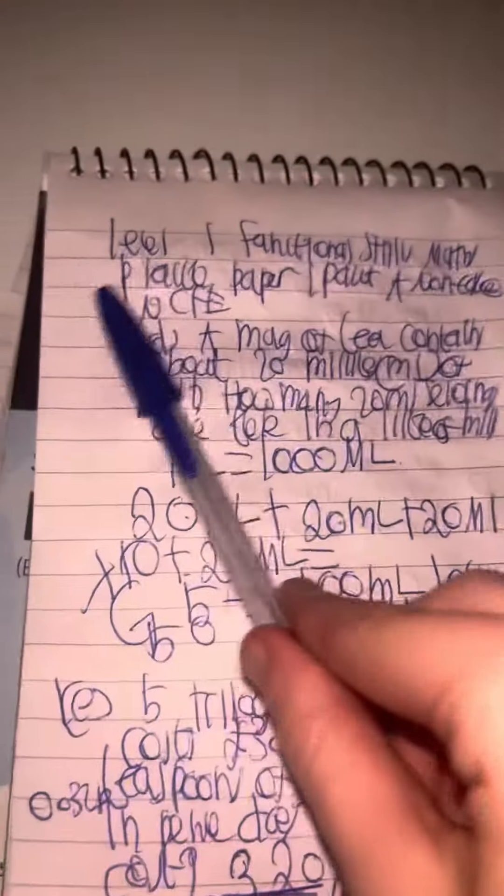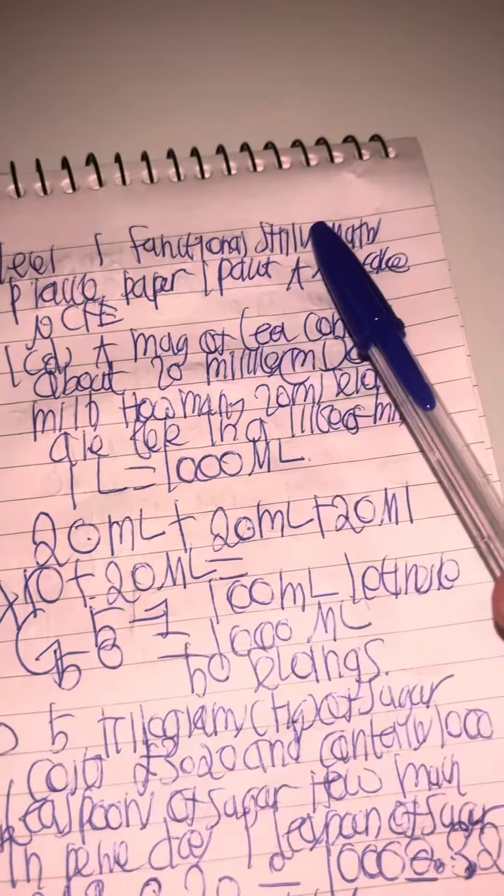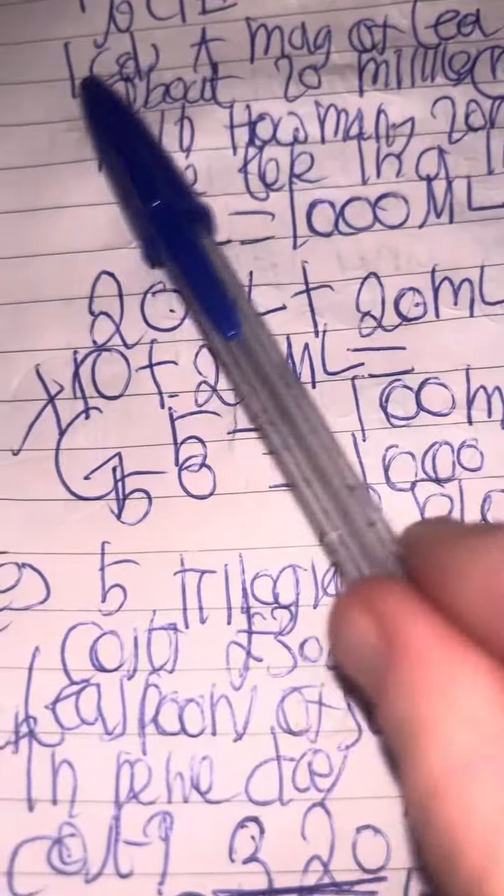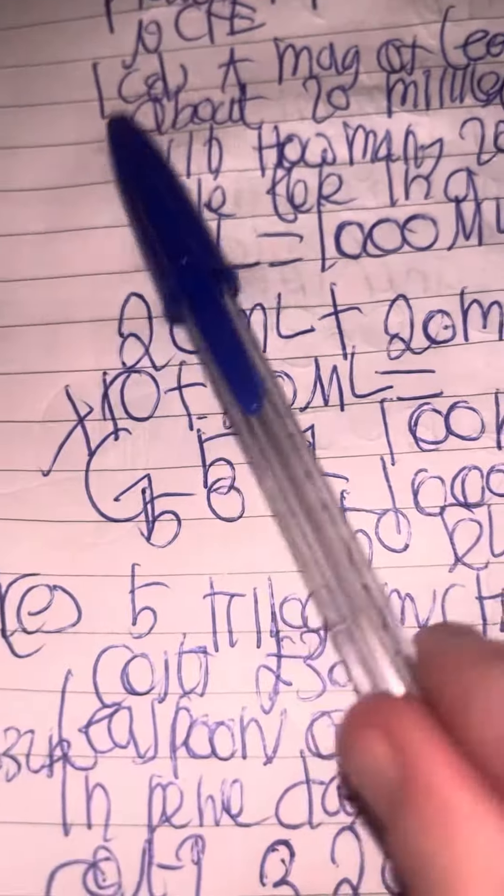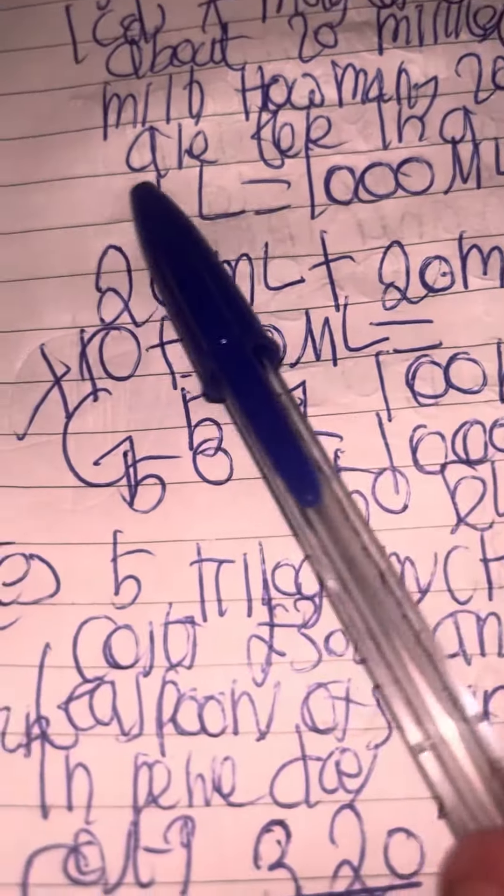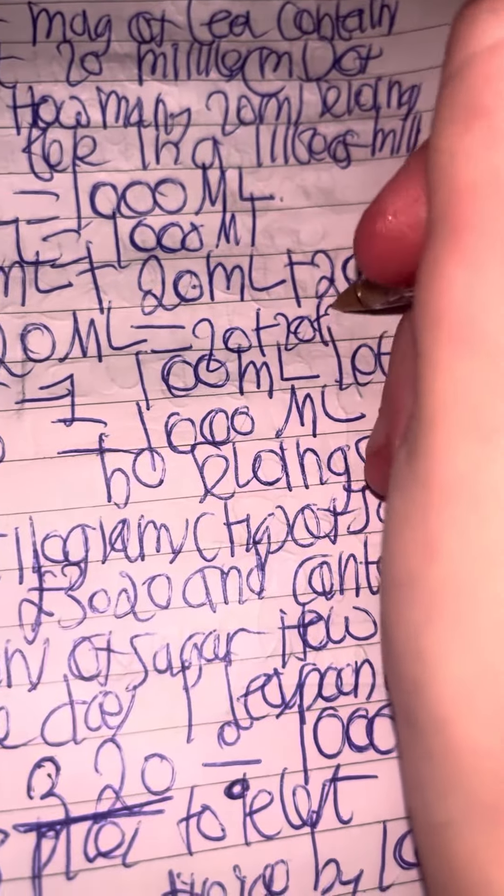Level one function skills math practice paper, part one, part A, non-calculator NCFE. A mug of tea contains about 20 milliliters of milk. How many 20 milliliter servings are there in a liter of milk? So one liter equals a thousand milliliters, so we're going to put one liter equals 1000 milliliters. So if we do 20, 20, 20...